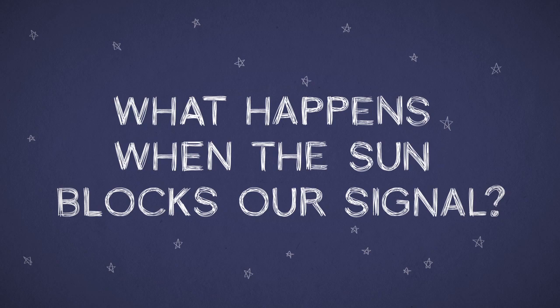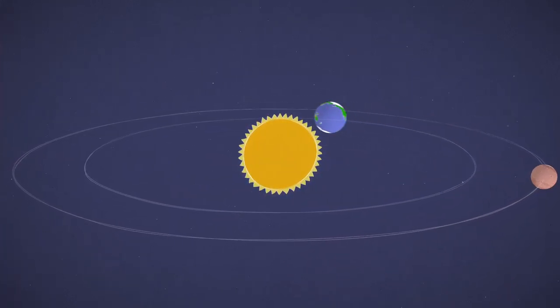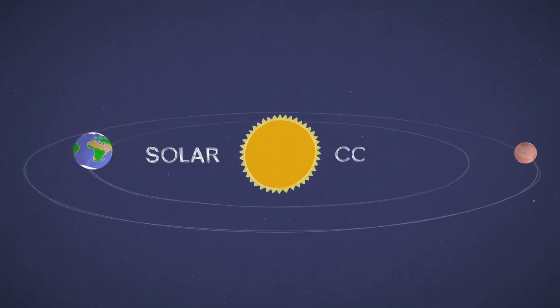What happens when the Sun blocks our signal? About every two years, Earth and Mars wind up on opposite sides of the Sun. That's called solar conjunction.